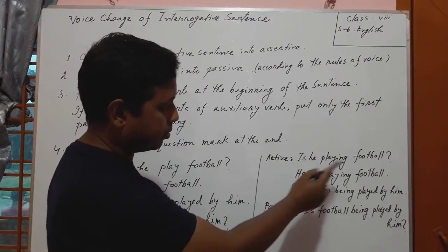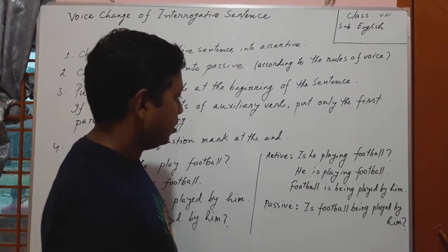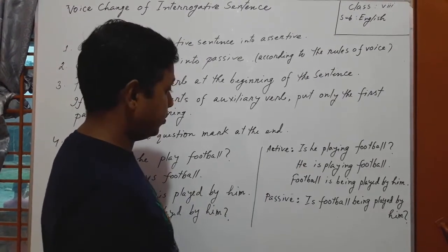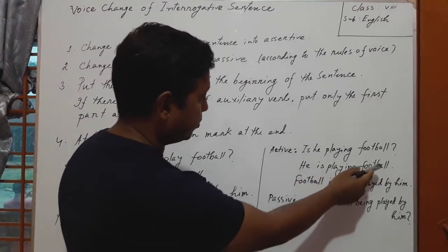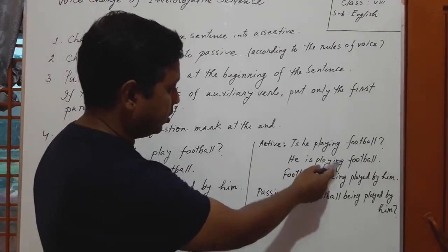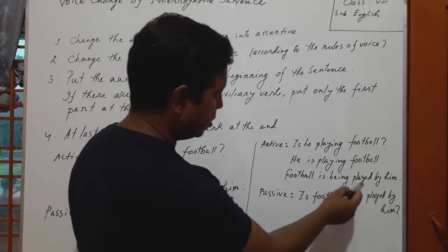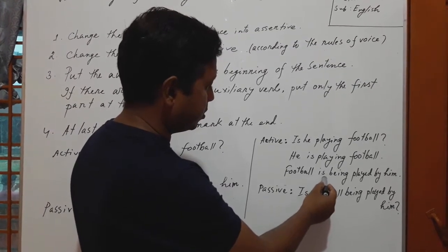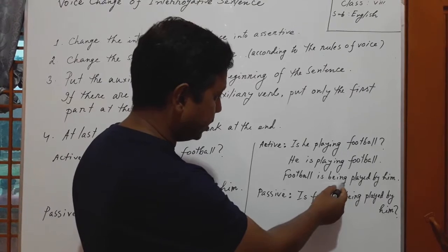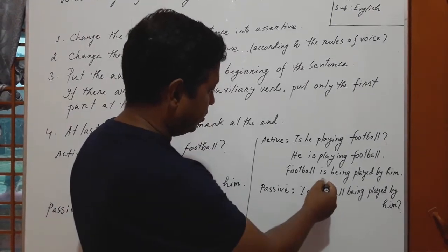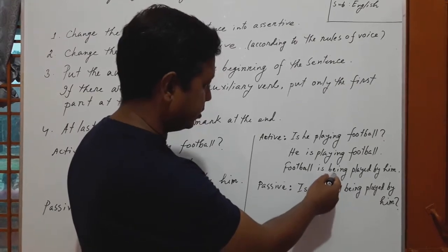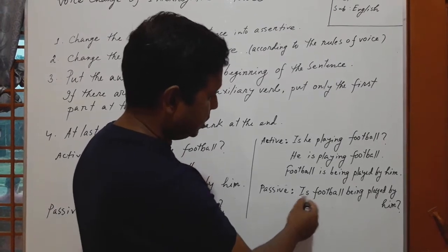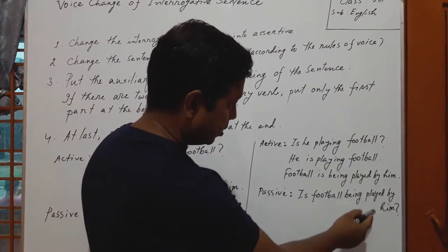The tense is present continuous. First we have to change this sentence into assertive. The assertive will be: 'He is playing football.' The passive will be: 'Football is being played by him.' In this sentence there are two parts of the auxiliary verb: 'is' and 'being'. So we have to use only the first part of the auxiliary verb at the beginning of the sentence.